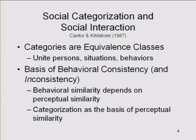In the social domain, categorization is an important cognitive basis for social behavior, for the simple reason that if we identify two people or two situations as belonging to the same category, we're likely to behave in the same way with respect to those two people or in those two situations. Categories constitute equivalence classes — members of a category are more or less equivalent with respect to category membership and elicit more or less equivalent forms of behavior. We can expect people to behave consistently across situations in the same category, but differently once we cross the categorical boundary. So categorization is the basis of both perceptual similarity and behavioral similarity.